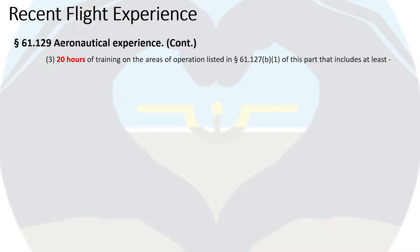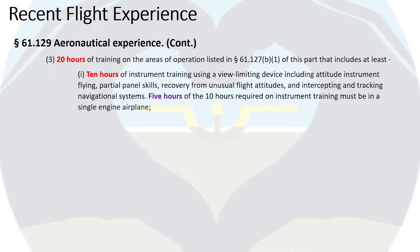You must also have 20 hours of training in the areas of operation listed in 61.127(b)(1), which includes at least 10 hours of instrument training using a view-limiting device. That instrument training must include attitude instrument flying, partial panel skills, recovery from unusual flight attitudes, and intercepting and tracking navigational systems. Five hours of the 10 hours required on instrument training must be in a single-engine airplane.